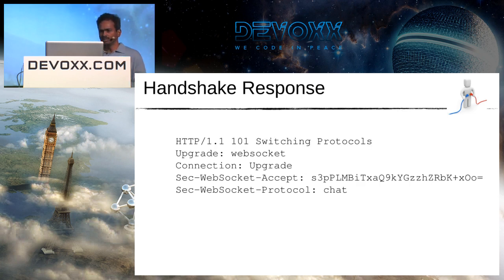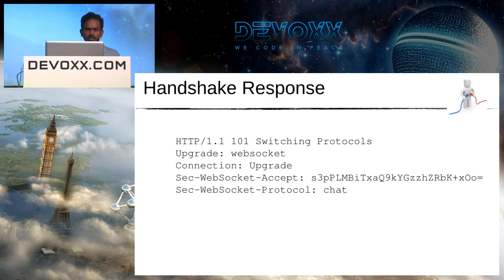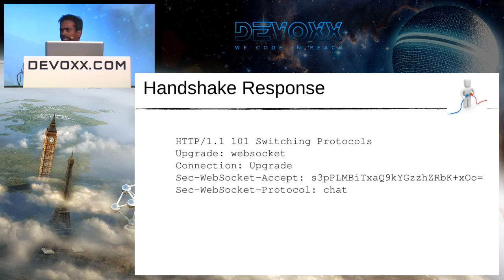Once the server receives the request, it responds with a handshake response, saying it understands WebSocket protocol, and returns HTTP status code 101 indicating it is switching protocols and upgrading to WebSocket. It also responds with an accept header computed from the client's key using an algorithm, giving the client a guarantee that the server really understands WebSocket and is not a fake server. In this example, both client and server have negotiated a sub-protocol called 'chat'.